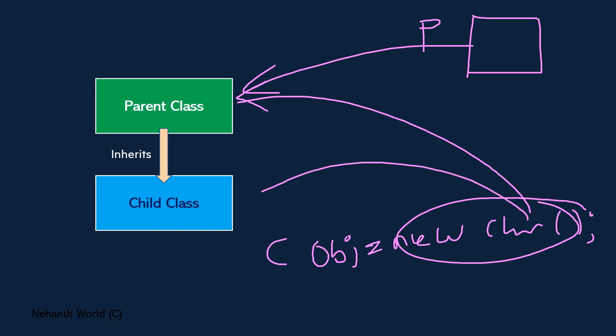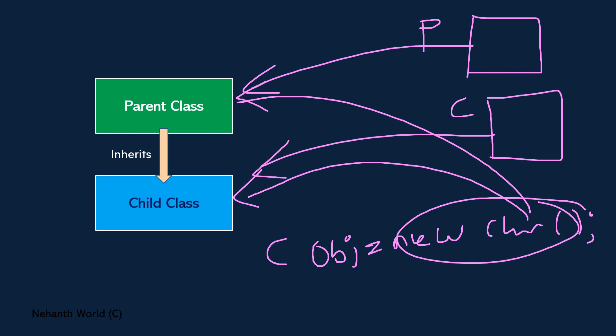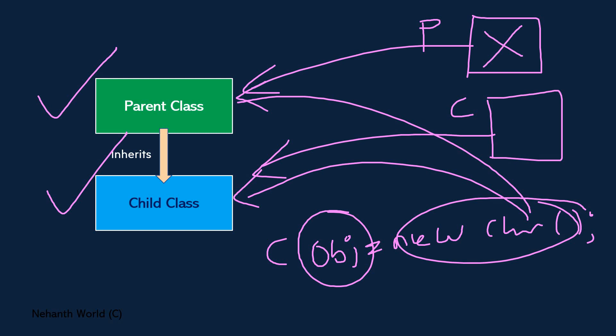Then it starts executing the child class constructor. Whenever the child class constructor is executed, memory will be created for the child class. So now memory is created for both the parent and child. Only then can we call both parent class members and child class members using the child object. If memory is not allocated for the parent, we cannot call the parent class members using the child class object. That is why memory is allocated for both parent and child when we create an object for the child class.